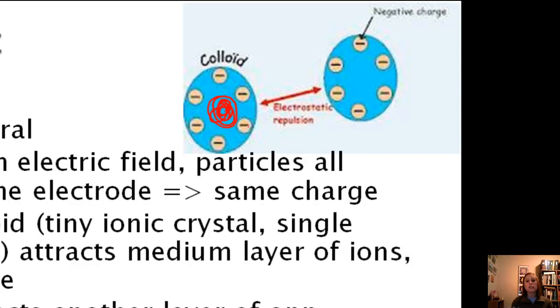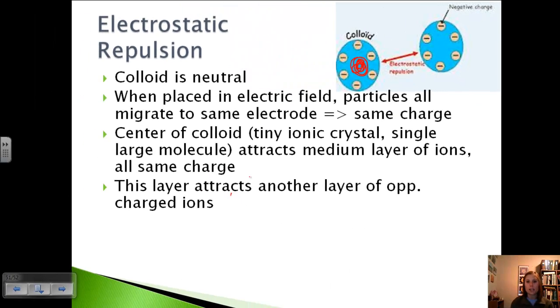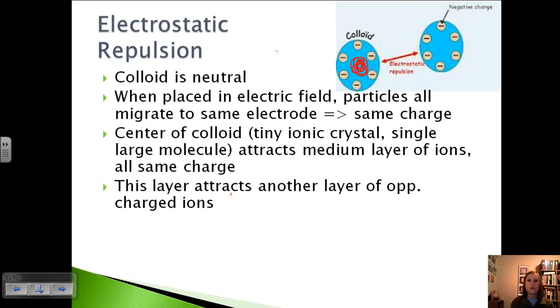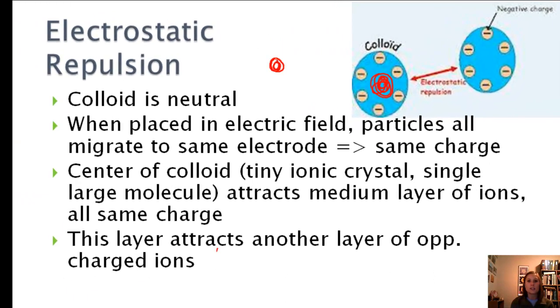And then that layer attracts another layer of oppositely charged ions. So if we were showing this zoomed in, here's our center, then let's say we've got positive ions being attracted to the center. And then those are going to attract negative ions. And so we're forming a center with basically two different layers.